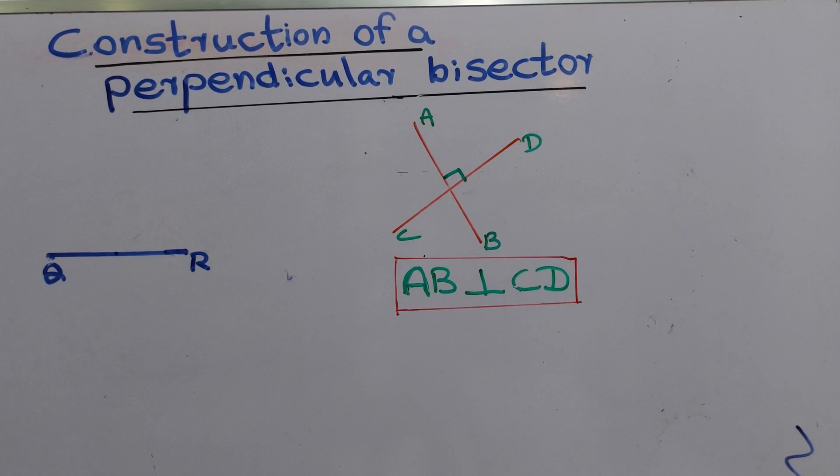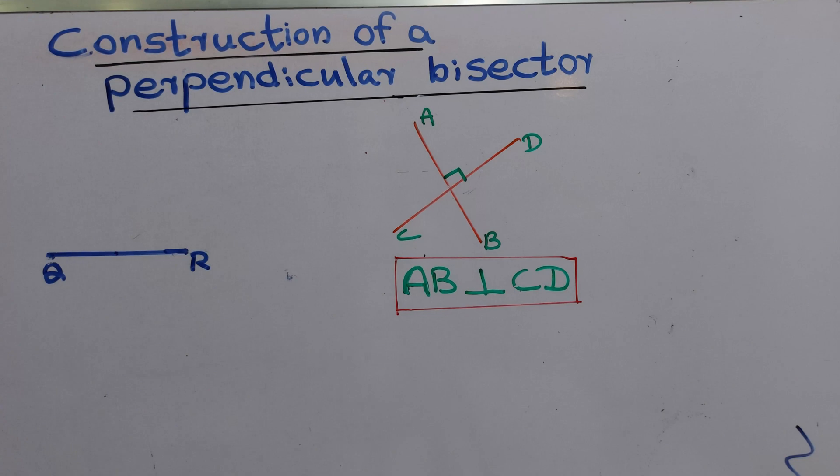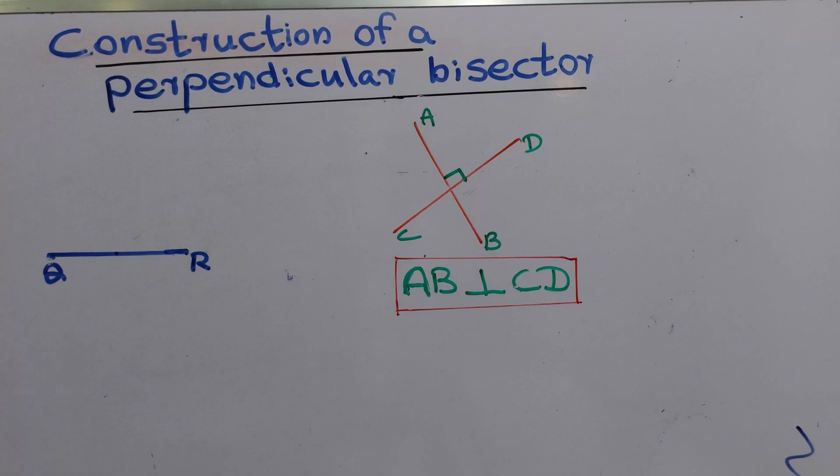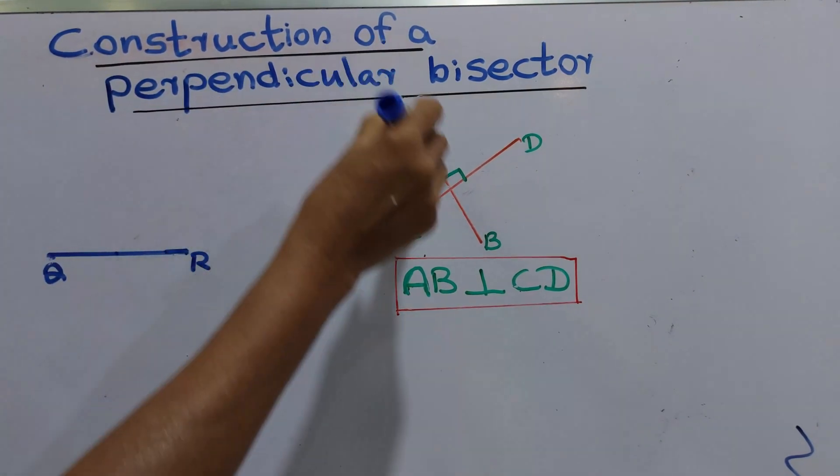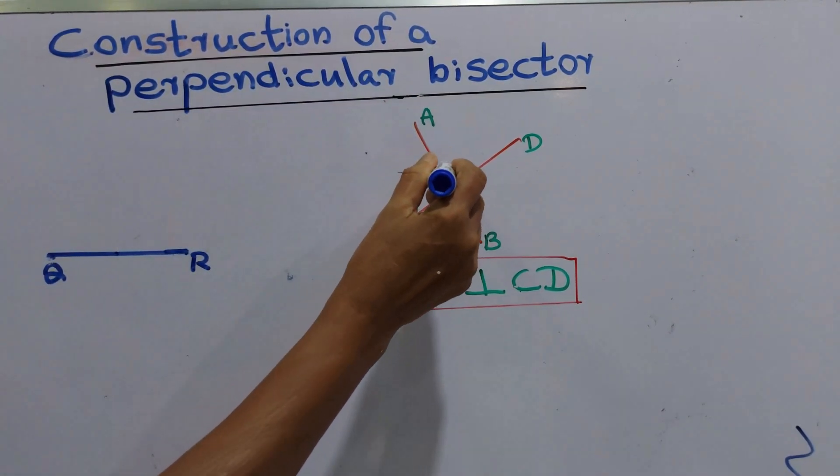Today we are going to construct a perpendicular bisector. What is a perpendicular bisector? Perpendicular means a line meets another line at a right angle.